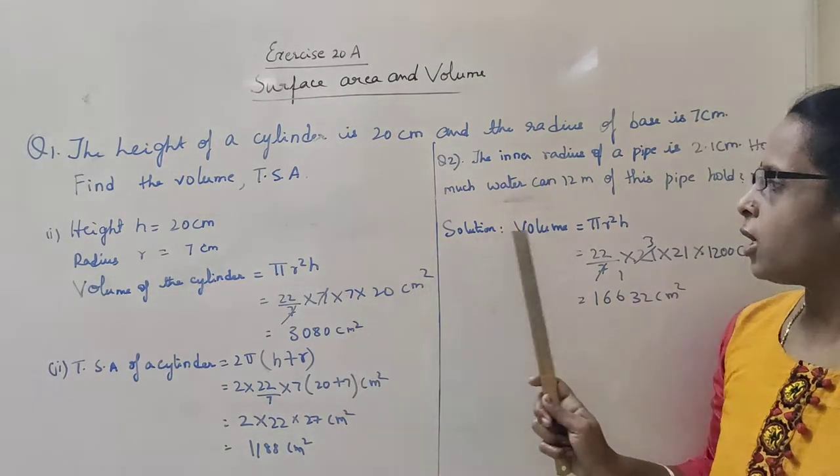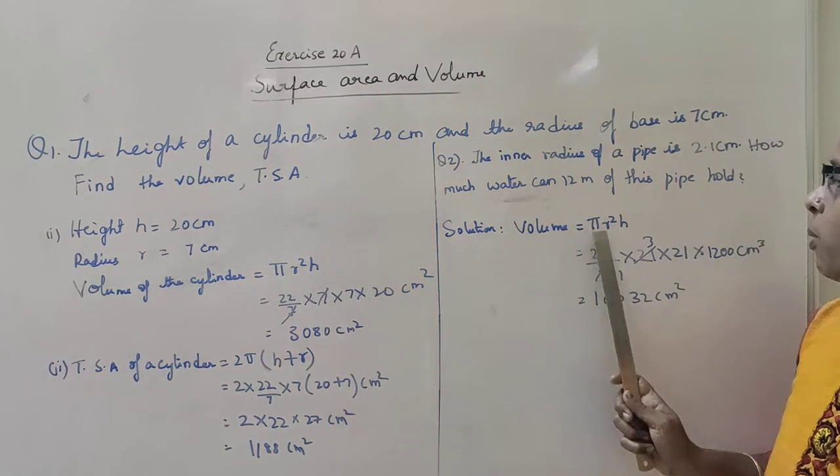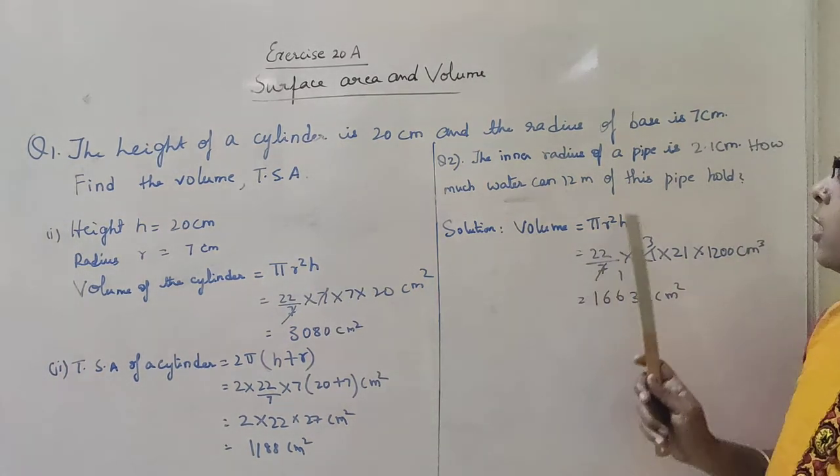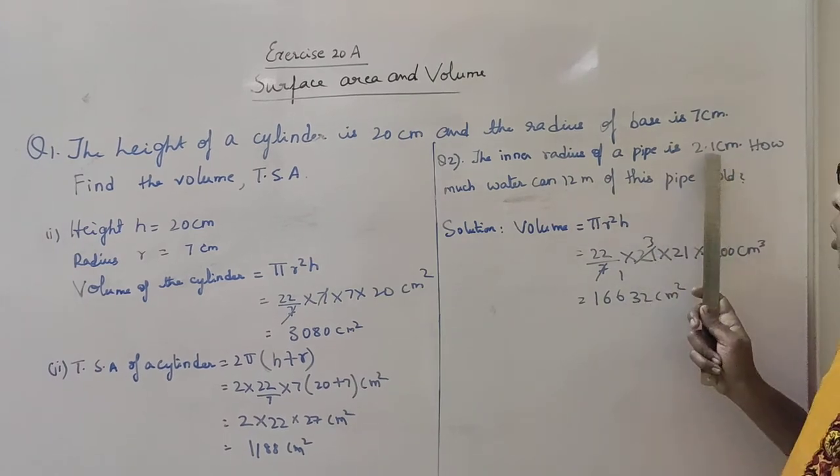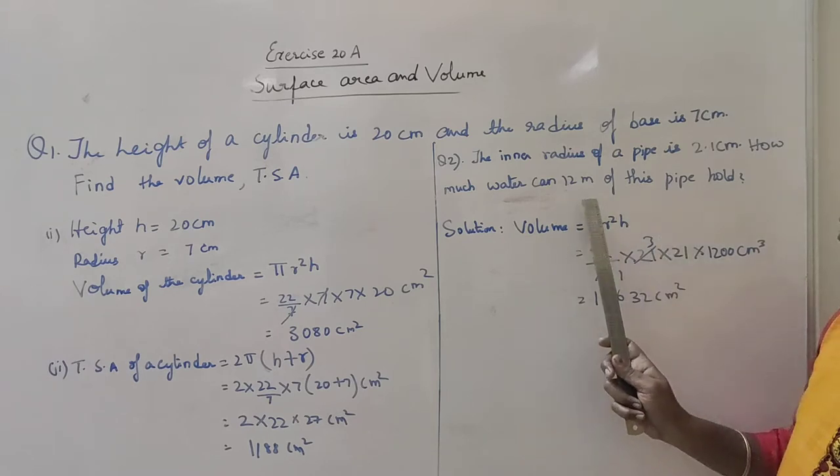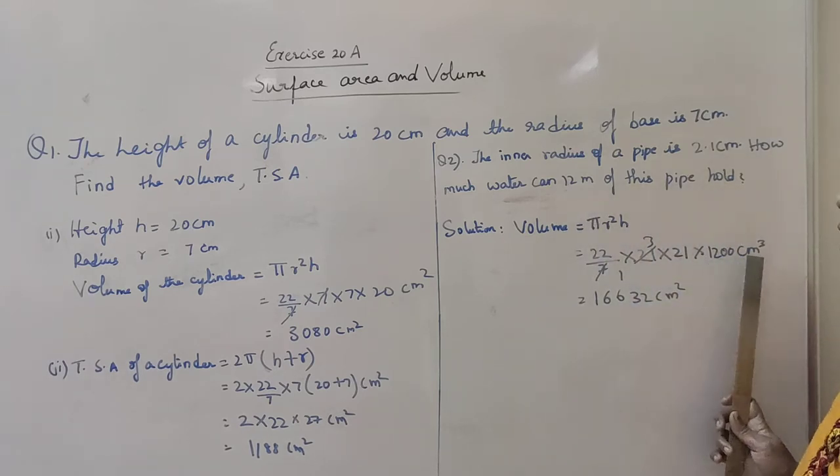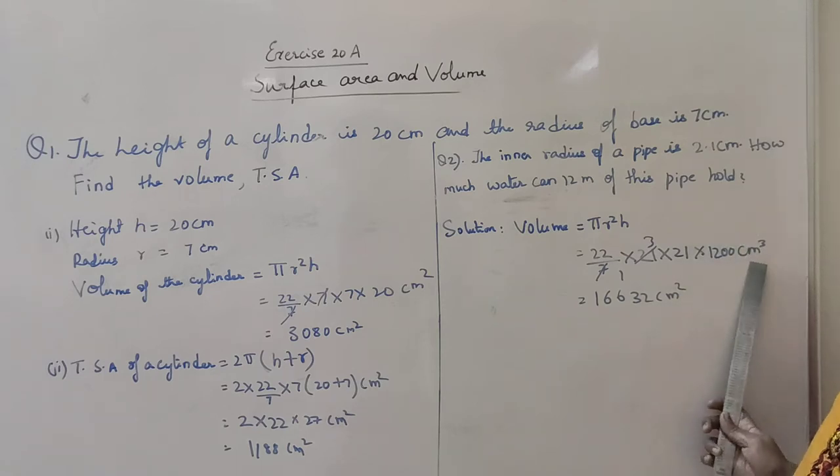Same, that is pi r square h. What is the formula for volume of the cylinder? Pi r square h. Pi is equal to 22 by 7. How much is the radius? 2.1. You have to remove the decimal point. That becomes 21 into 21 into 1200 cm square. How much is the height? Height is 1200 cm square.